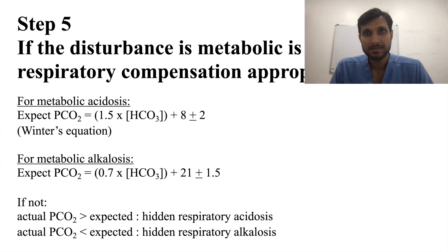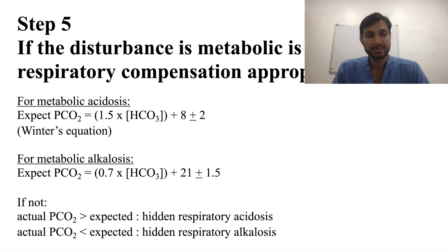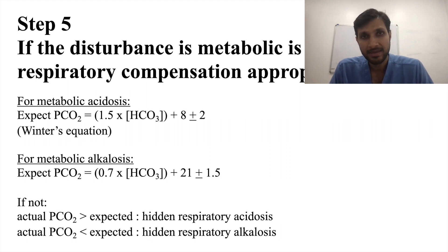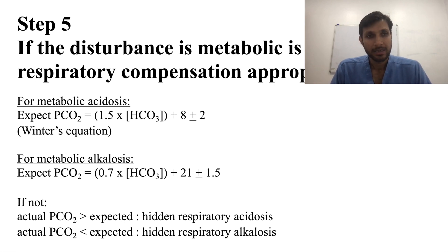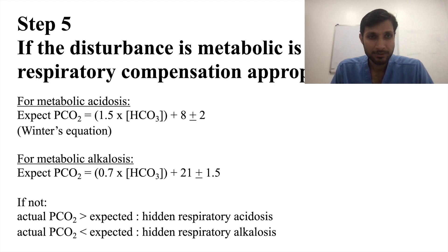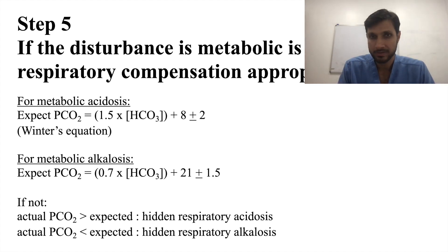Step 5 is determining whether respiratory compensation is appropriate for a metabolic disturbance. For metabolic acidosis, the Winter's equation gives expected PCO2 = 1.5 × bicarbonate + 8 ± 2. For metabolic alkalosis, expected PCO2 = 0.7 × bicarbonate + 21 ± 1.5. If actual PCO2 is more than expected, there is hidden respiratory acidosis; if less than expected, there is hidden respiratory alkalosis.